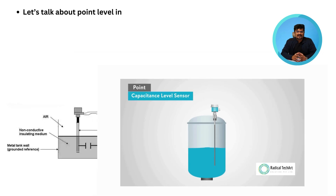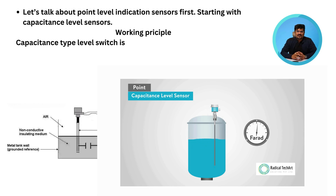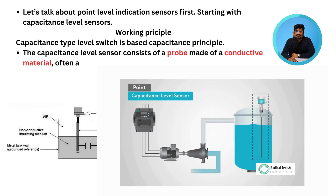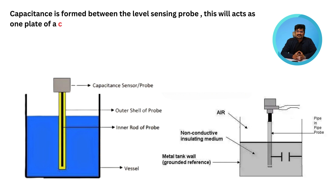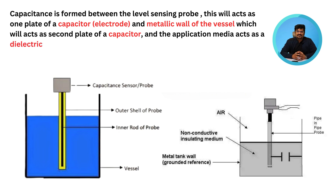Let's talk about point level indication sensors, starting with capacitance level sensors. The main working principle is capacitance. The capacitance level sensor consists of a probe made of a conductive material, often a metal. The probe is inserted into a container or tank where the level needs to be measured. Capacitance is formed between the level sensing probe — the load of the level sensor — which acts as one plate of a capacitor or electrode, and the metallic wall of the vessel, which acts as the second plate of a capacitor.